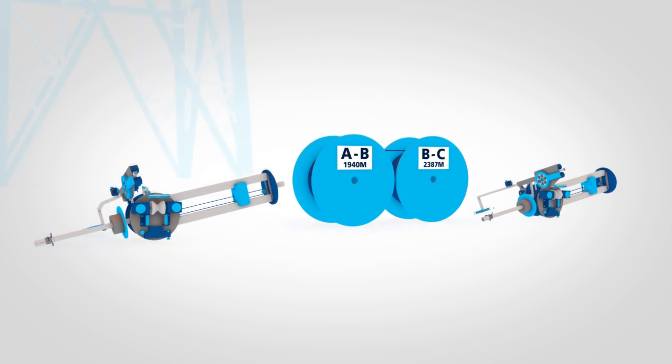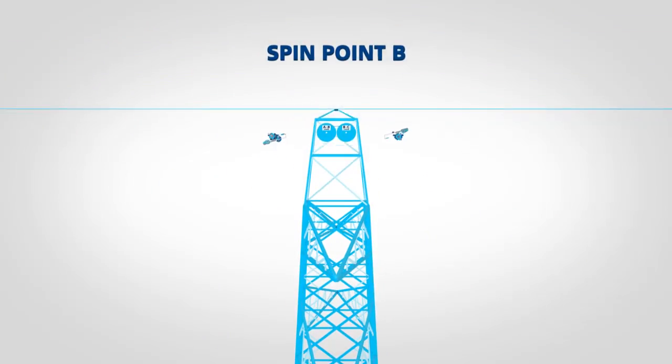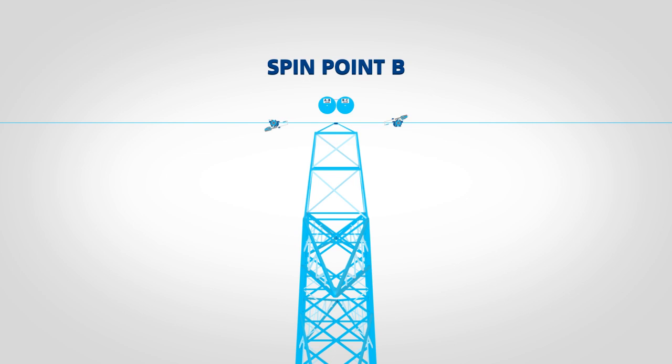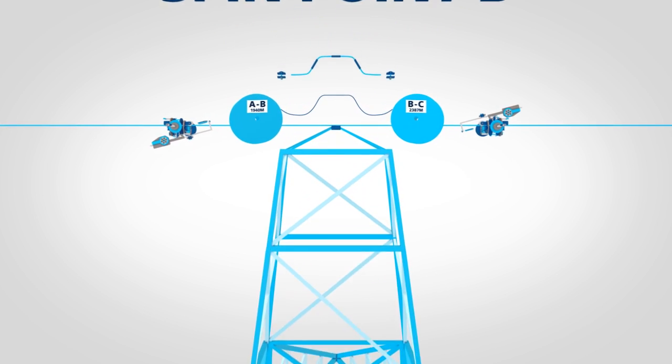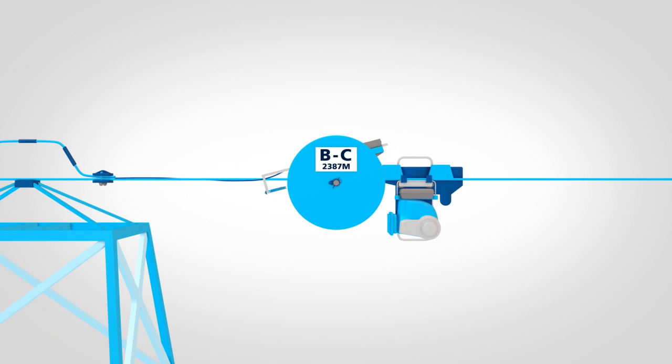Installation begins by hoisting wrapping machines and a cassette onto the line at a starting location or spin point. The cable joining the two drums is secured to the host conductor and then the wrapping machines begin their work.